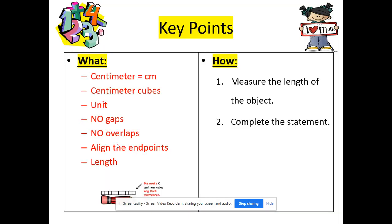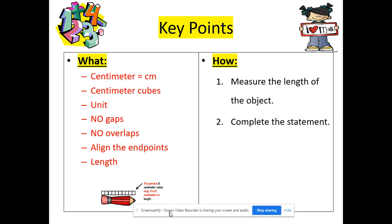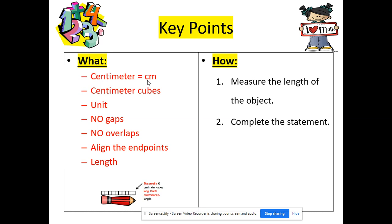Our key points. We have centimeter, and instead of writing the whole unit, since it's such a big word, we can just use the abbreviation CM, per centimeter. We're also going to be using centimeter cubes to measure our objects today, and each one centimeter cube equals one centimeter. That's why they're called centimeter cubes. The unit we're going to be using today is centimeter cubes, because we're using centimeter cubes to measure.